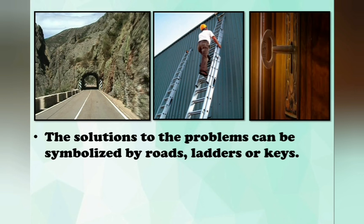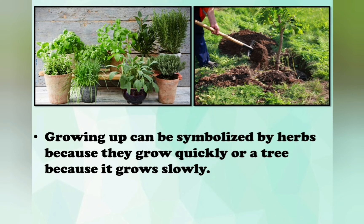So if a problem seems like a mountain, there will always be a road through it. If a problem seems like a high wall, there will always be ladders to climb it. If a problem seems like a locked door, there will always be a key to open it. Growing up can be symbolized by herbs because they grow quickly, or a tree because it grows slowly.